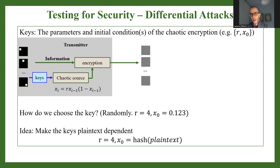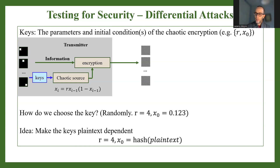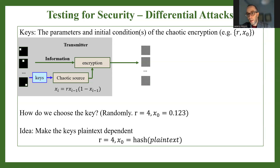If we have fixed keys — for example, a fixed r equal to 4 and a fixed initial condition throughout the whole communication — an attacker may be able to reveal vulnerabilities, similarities, or patterns in the encryption design by repeatedly creating the same image with minor changes, obtaining ciphertexts, and comparing them. With fixed keys, they may be able to uncover patterns in the encryption process.